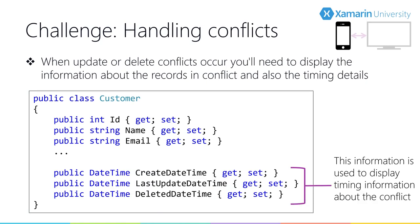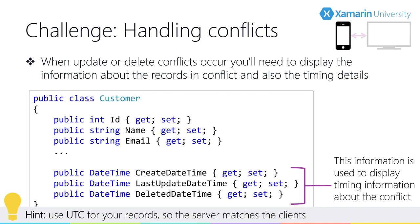When handling update and delete conflicts, if you need to confirm information to users, you'll have to display information about the records that are in conflict — including details about the records and when they were updated. While this example shows the date and time of when records were created, updated, and deleted, you might also want to store the usernames associated with those inserts, updates, and deletes to show conflict details. When storing time, you might want to store it as UTC (universal time) and then convert it to the local time zone when presenting it on the device. Keep in mind that these date times are used for presentation only — you wouldn't use them to check versions.